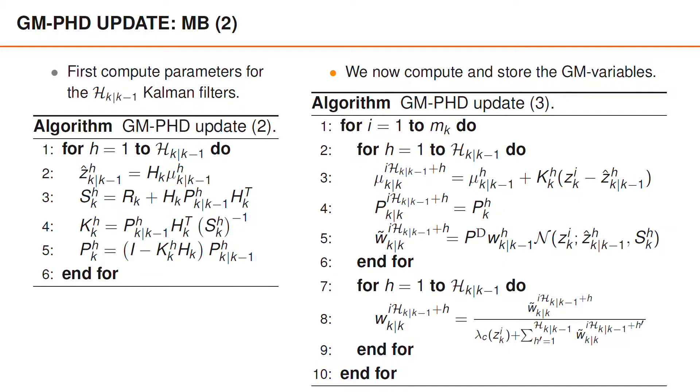To do this, we use an outer for loop over i from 1 to mk. That is, here we loop over all the measurements or the Bernoulli components. For every measurement, we would like to compute the moments mu and p, as well as the weight, for every value of h and store them with a suitable index. In this algorithm, we store the variables using the index i times H k given k minus 1 plus h.